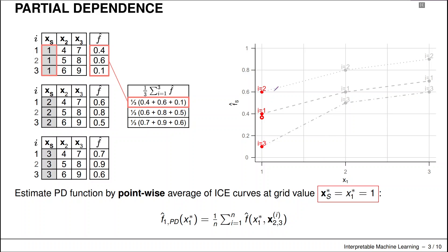So what we do here is we take a look at all of the individual ICE curves. And now at a certain point, for example, at x1 equals one, that's kind of our first grid point, we take the prediction value of all of our ICE curves, we just average them. And that gives us the first value of our partial dependence function.